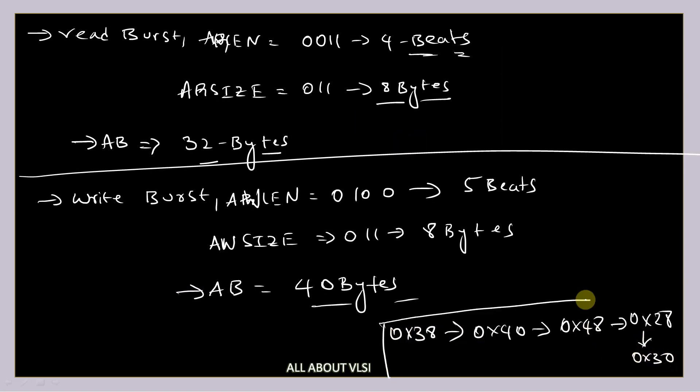You can consider multiple scenarios and try to calculate different address boundaries as an exercise — please let me know in the comments whether you can calculate them. The same calculation applies to the AHB protocol as well; the burst calculations you learned there follow the same principles. That's all for this video. If you like this video, please like, share, and subscribe to my YouTube channel 'All About VLSI'. Thank you for watching.